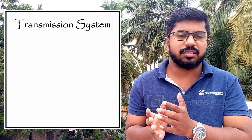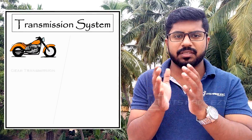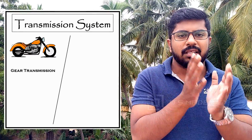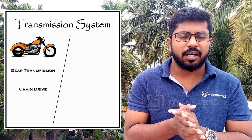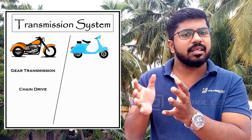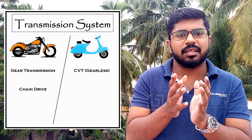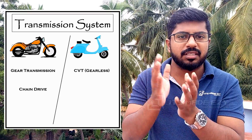The first thing is the transmission system. For the bike, the gear transmission system — we use the chain drive system. For the scooter, we use the continuously variable transmission, CVT.